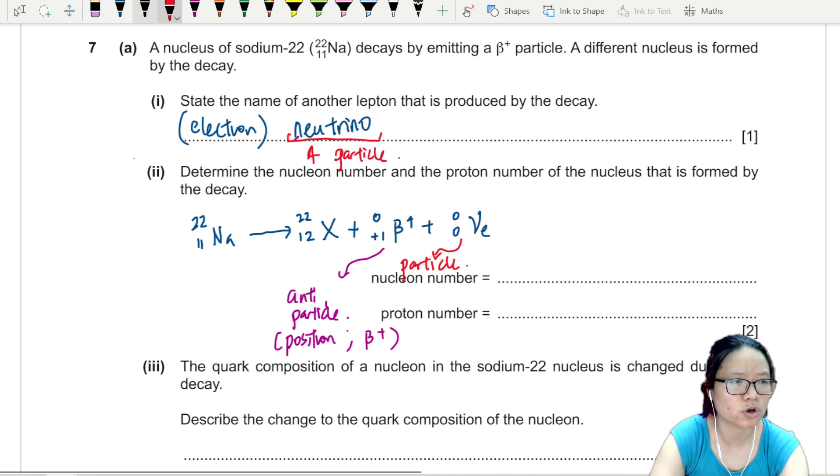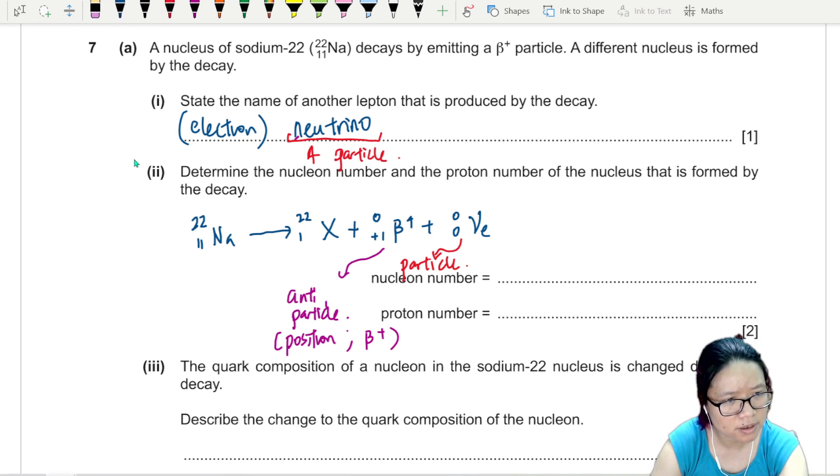And then the nucleon and proton number, I sort of balanced the equation already. No, I haven't balanced yet. 22 plus 0 is 22. 10 plus 1 is 11. So it's 22 and 10.